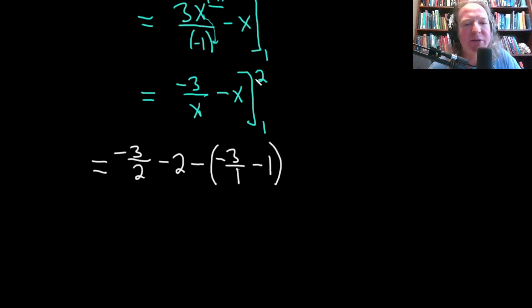All right, so plugging in the 2, let's check: 2 here, 2 here, minus, and then plugging in the 1's. Everything looks good. Okay, let's clean this up. This is negative 3 over 2 minus 2.